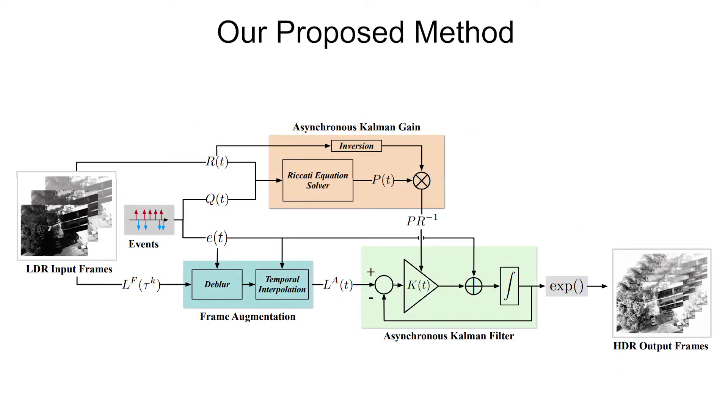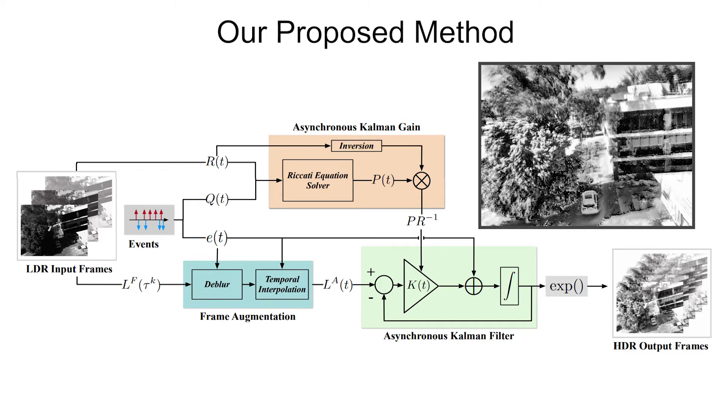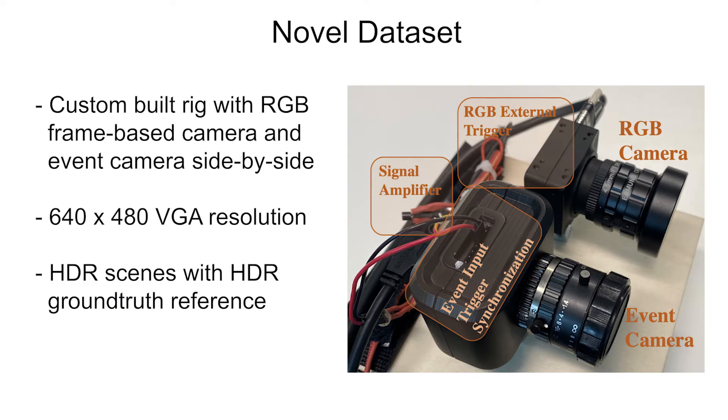The internal filter states, including the Kalman gain and the output image state, are updated asynchronously with every event. The final output is a high dynamic range video that can be sampled at virtually any frame rate.